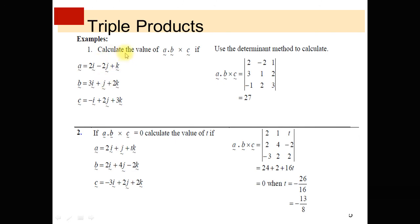Example: Calculate the value of A dot (B cross C) using the determinant method. Suppose vector A = 2i − 2j + k, B = 3i + j + 2k, and C = −i + 2j + 3k. Setting up the determinant with the components of A, B, and C in rows 1, 2, and 3 respectively, and expanding, we obtain the result 27. So A dot (B cross C) equals 27, and this is the volume of the parallelepiped.